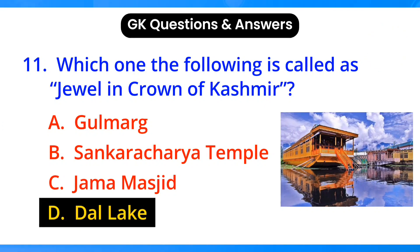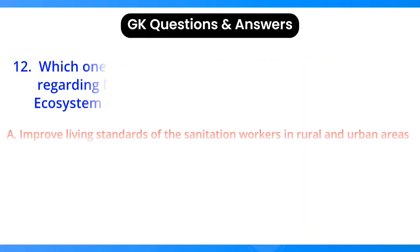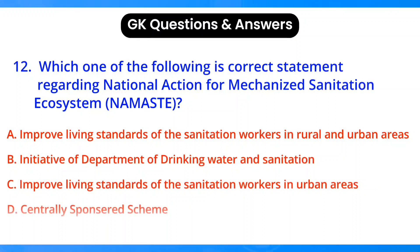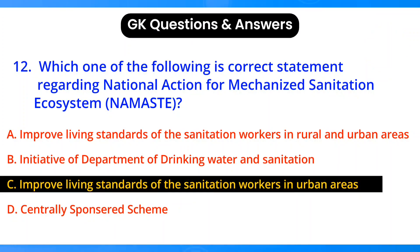Which one of the following is the correct statement regarding the National Action for Mechanized Sanitation Ecosystem (NAMASTE)? Answer: option C, to improve the living standards of sanitation workers in urban areas.